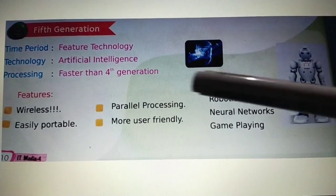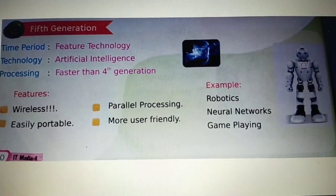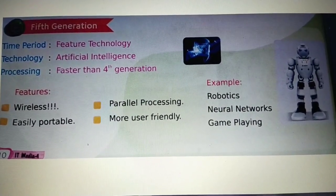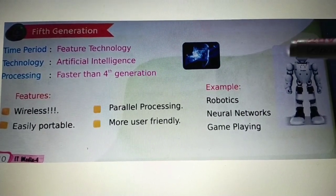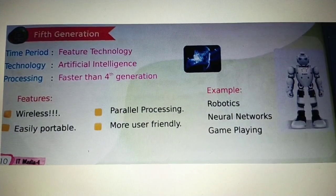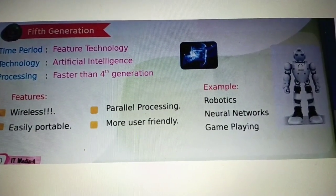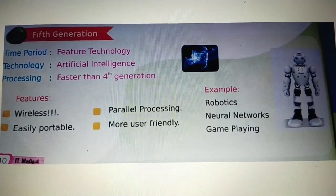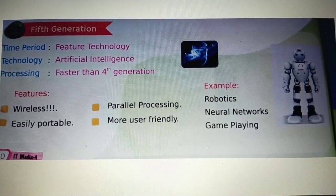The technology used in fifth generation computers is artificial intelligence. What do you mean by artificial intelligence? It is a technique with which a machine is able to think and take decisions like human beings. Robotics is an example of that. If you have seen the film 'Android Kunjappan,' you can easily identify artificial intelligence in it — a machine that is able to think and take decisions like human beings.